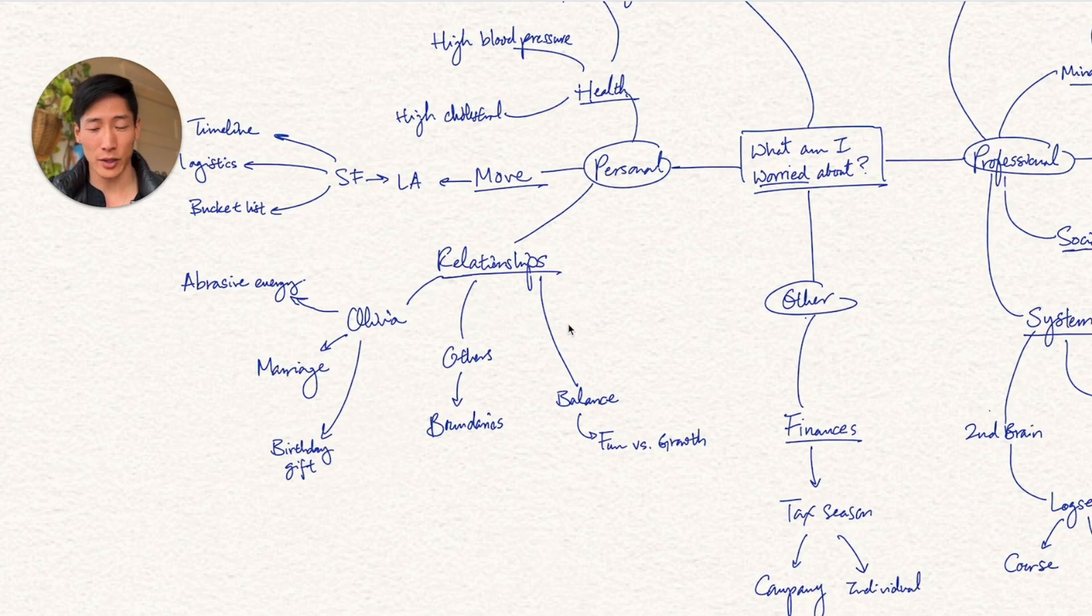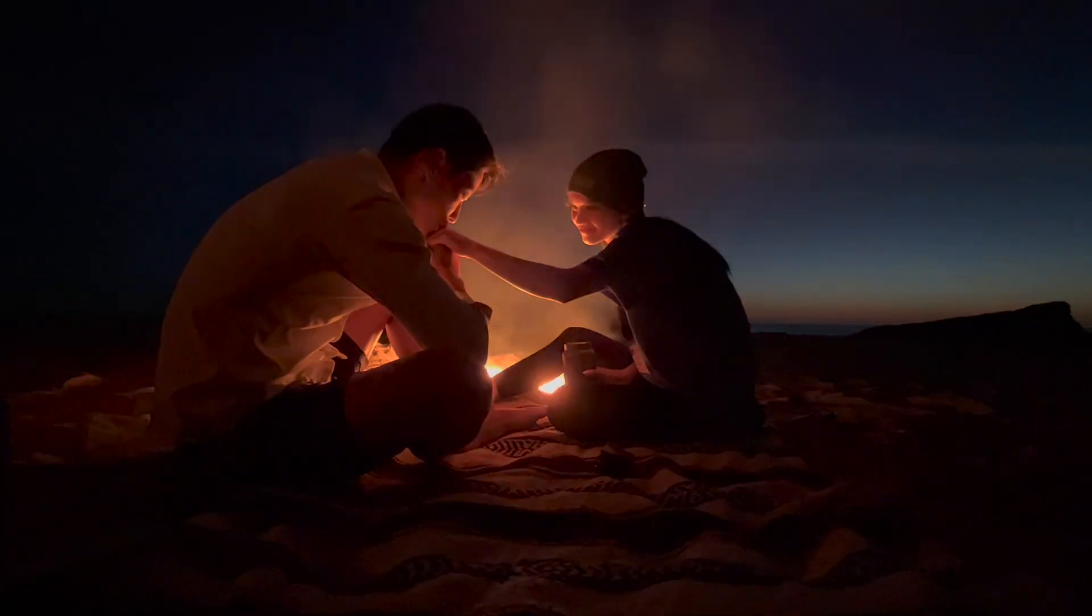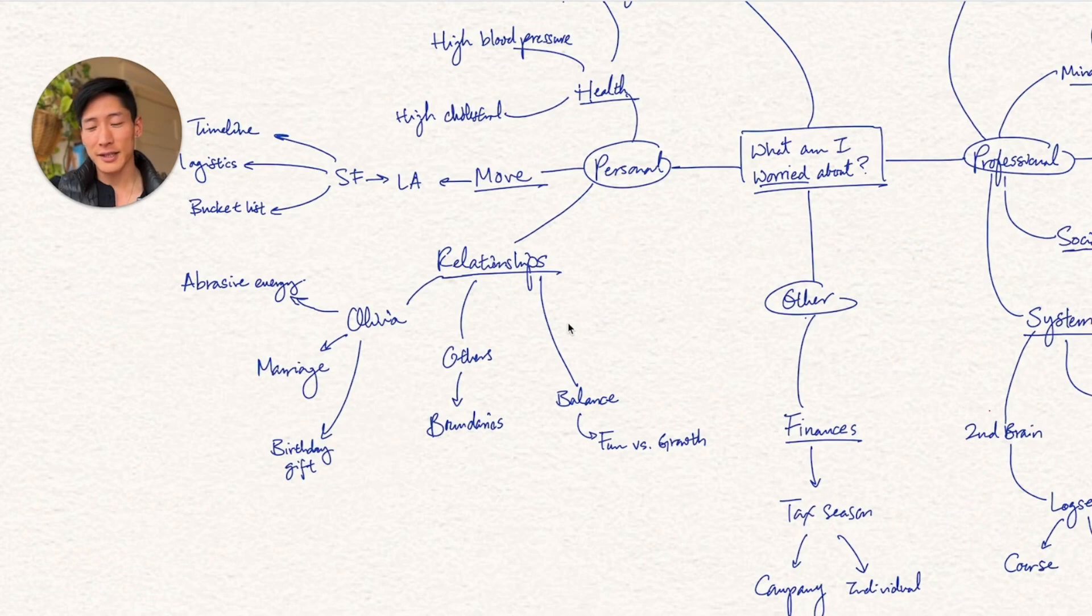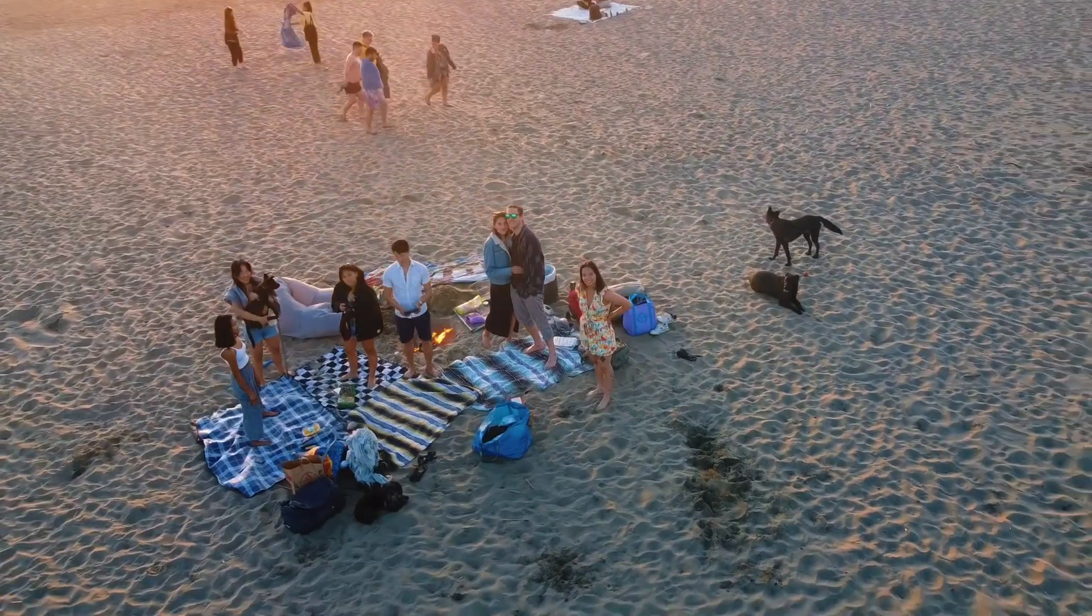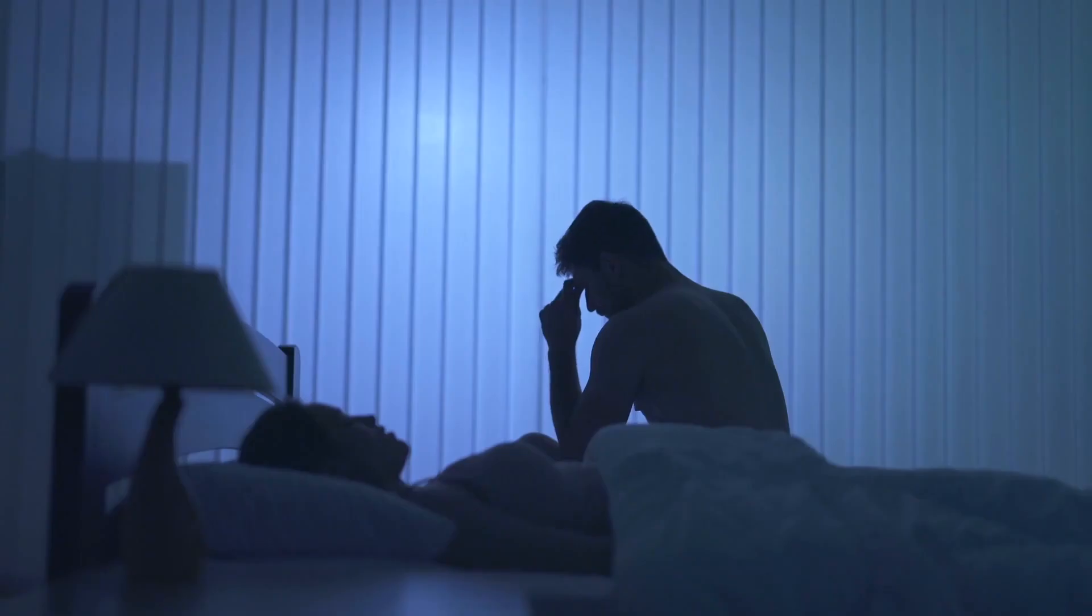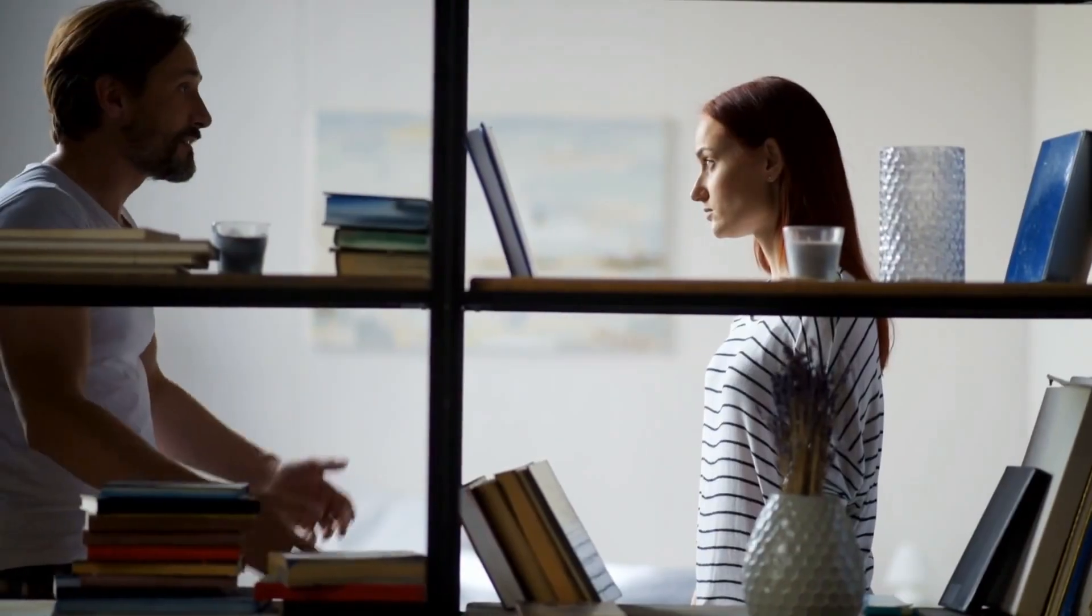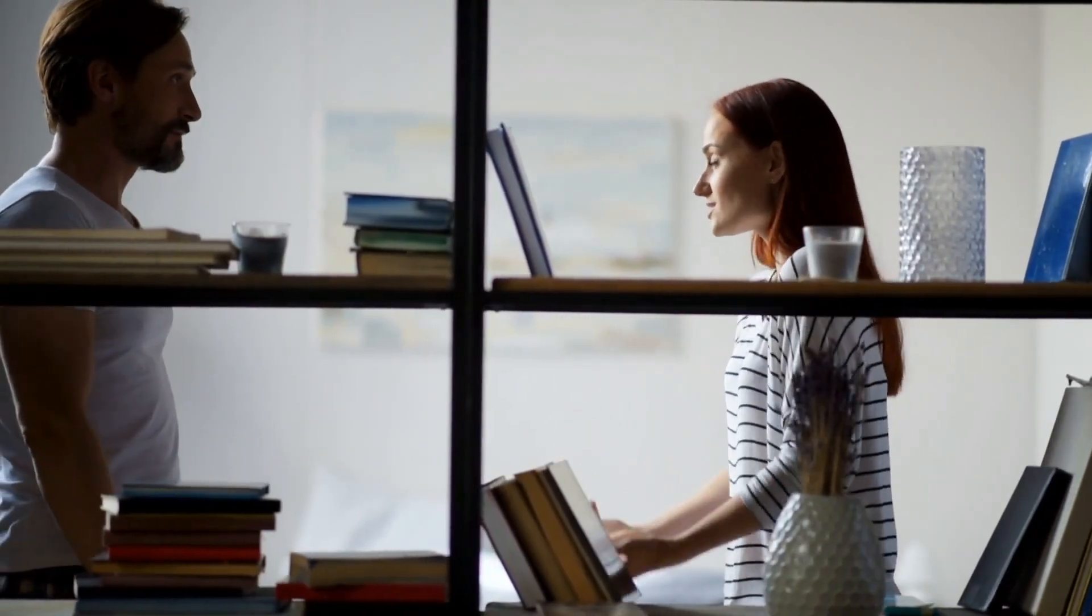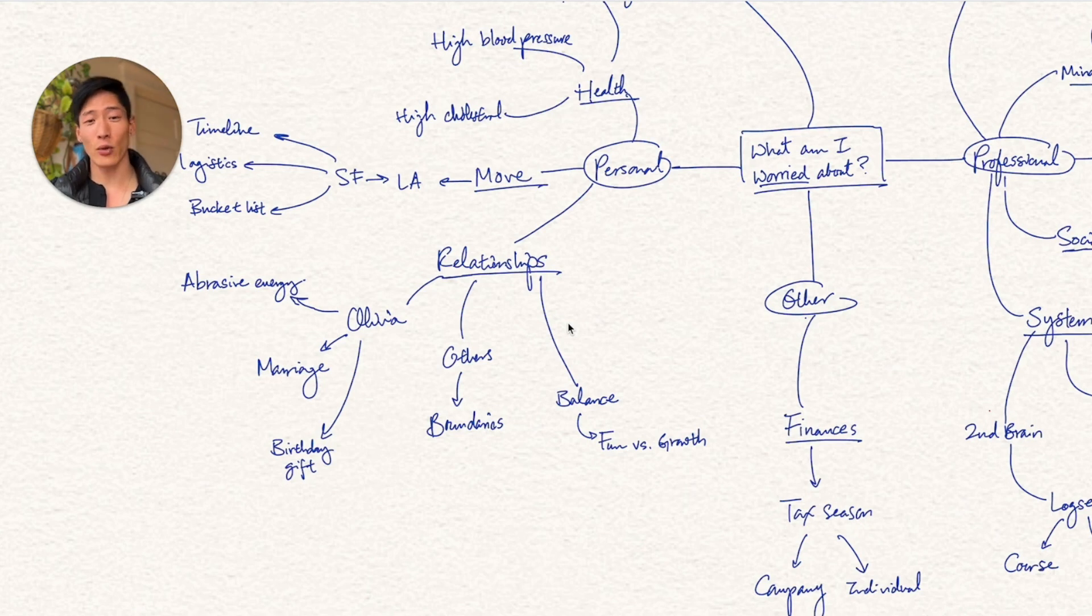Finally, there's relationships, which for me, top of mind is my marriage with my wife, Olivia. And this whole month has actually been quite difficult for us because she just moved from an hour south of here to San Francisco. And with any new living situation and so much of the movement, we've also been doing a lot of social stuff with friends. We haven't had a lot of stillness. So we both feel a bit frayed at the edges. And because of that, there's a lot of abrasive energy between the two of us, which is contributing to more conflicts, arguments.